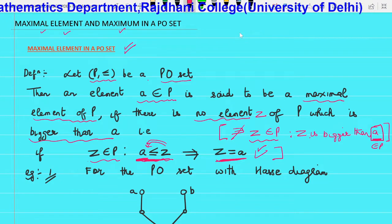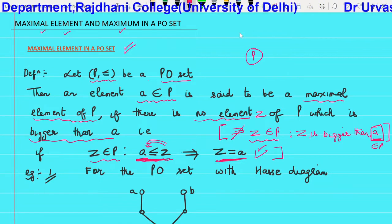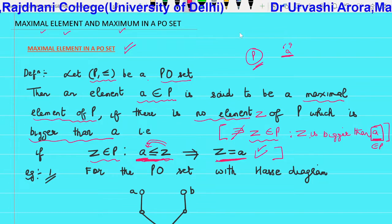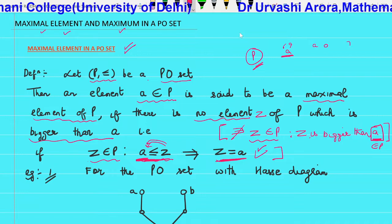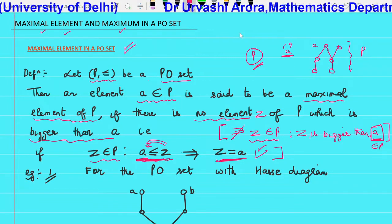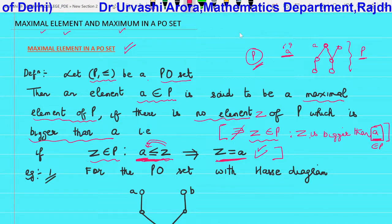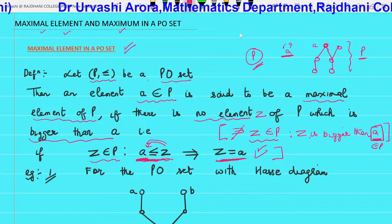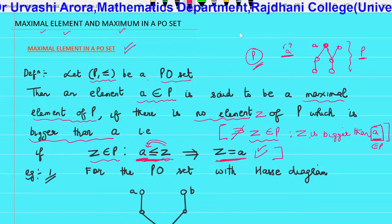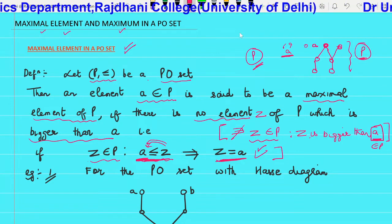Interpreting this diagrammatically using the Hasse diagram: if we draw the Hasse diagram of a PO set P in which an element A is maximal, then since A is maximal, there will be no element of P which is bigger than A. This means there will be no element above A in the Hasse diagram. So A will be at the top of P with no element on top of it. All maximal elements will be seen at the top of the Hasse diagram.